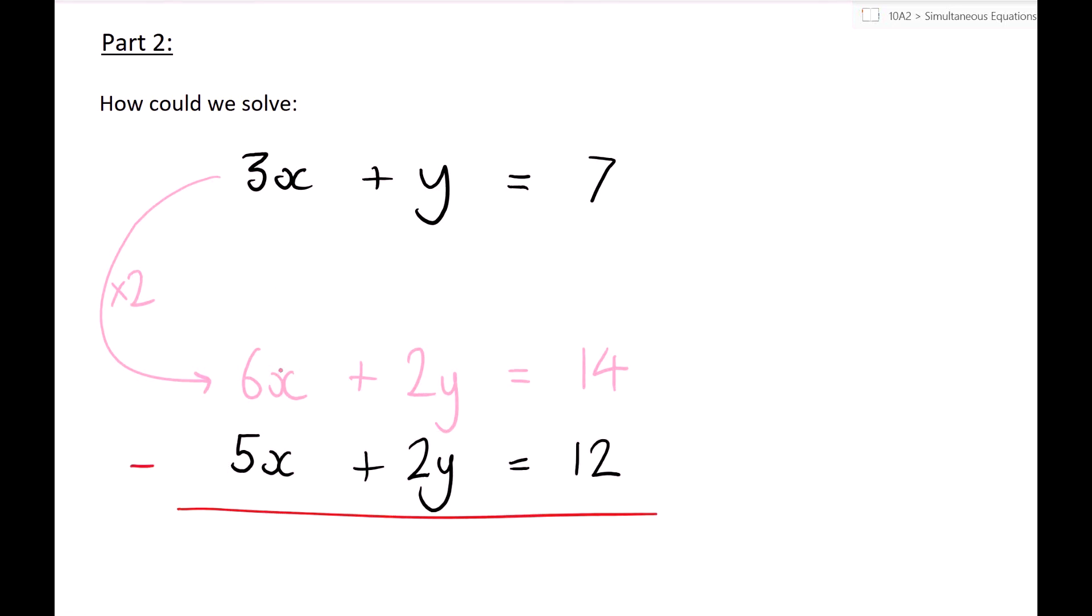It doesn't really matter, it just makes life a bit easier solving this. So same sign, so we subtract, 6x minus 5x is x or one x, the y's cancel out as they always will, and we've got x equals 2.